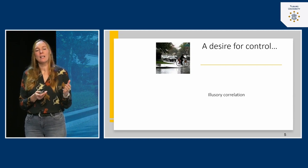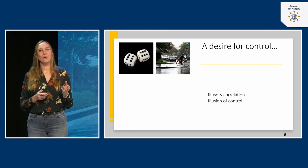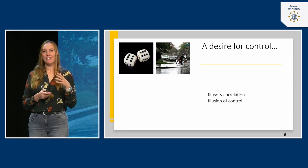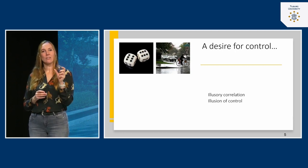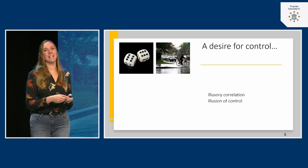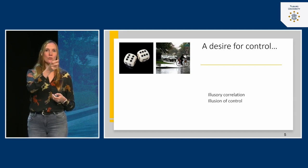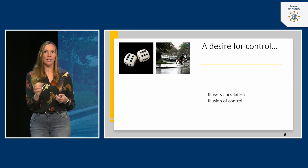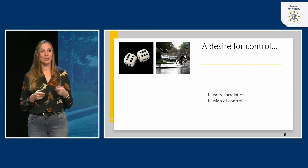We feel like we have the power to control outcomes, especially when the stakes are higher. We also feel we can control outcomes by changing our behavior. Observation research in casinos shows that when players want the dice to show a small number, they roll the dice very slowly, and if they want a higher number they throw them hard. This is called an illusion of control — changing behavior based on the idea that you're controlling the outcome, which of course doesn't actually happen.